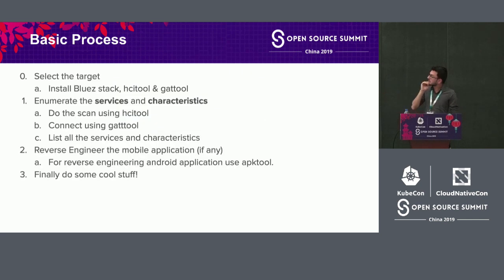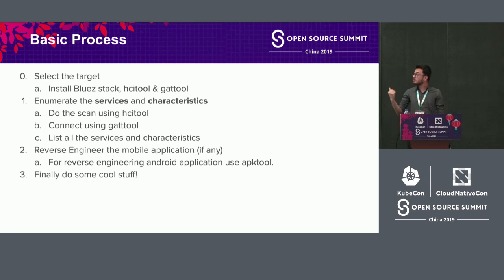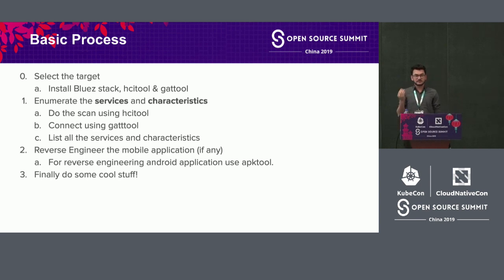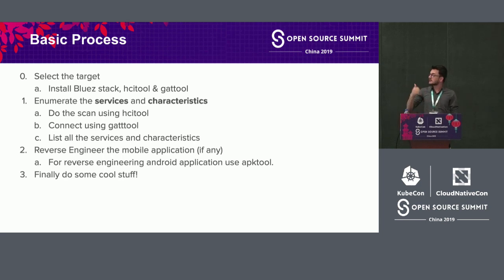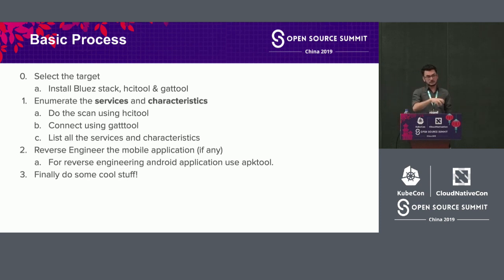If you really want to attack a BLE device, there are a few basic steps. Step zero is selecting the target — collect as much information as possible about the device. It's always better to refer to the hardware manufacturer's manual. In Linux, there are tools like the BlueZ stack, Adsetool, and Gatool which allow you to gather more information about the devices.